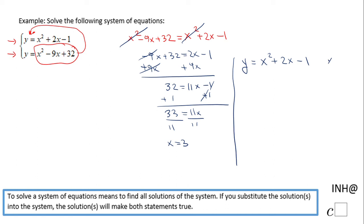And we're going to replace that x with 3. So we end up with y equals 3 squared plus 2 times 3 minus 1.